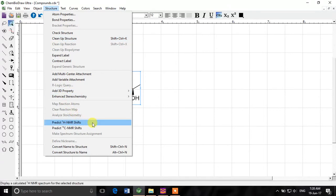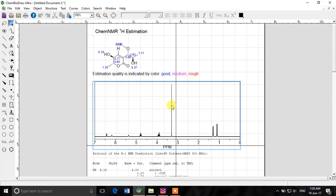So now if we click that button we have predicted the proton NMR for this compound. It will also give you an estimate like what is the quality of the estimate. Is it good, medium or rough in different colors. You can see that it is actually good quality prediction.